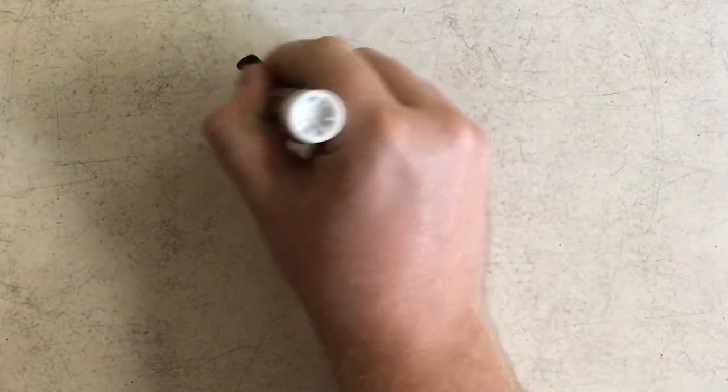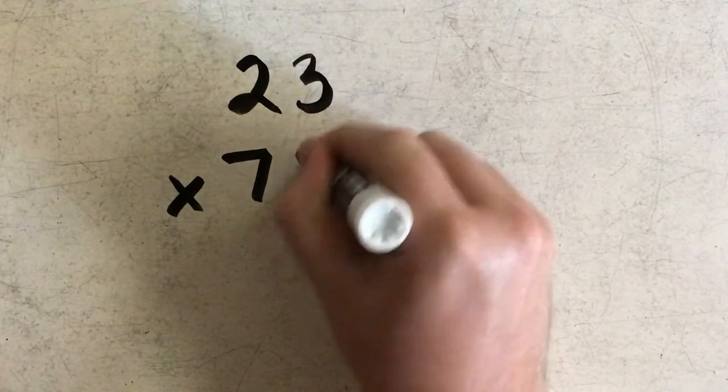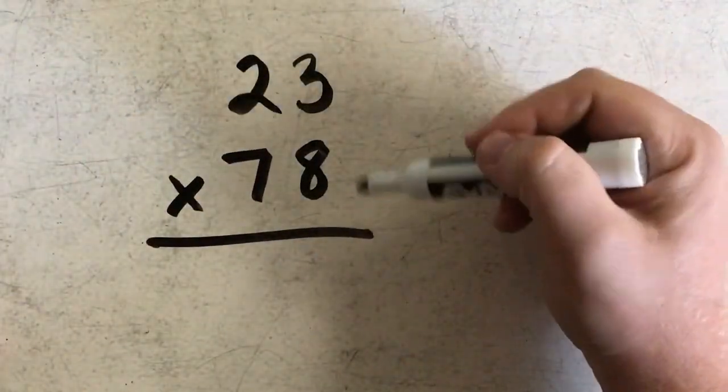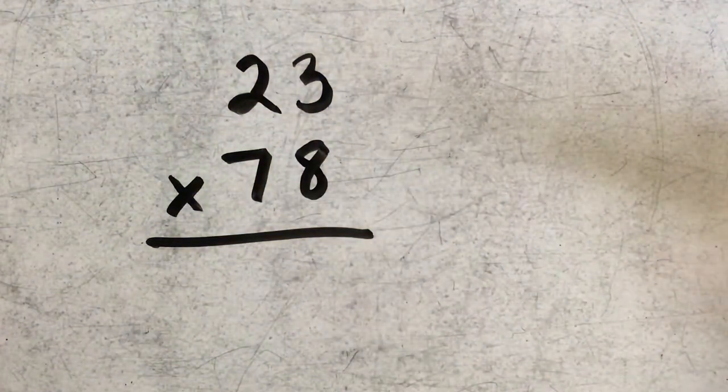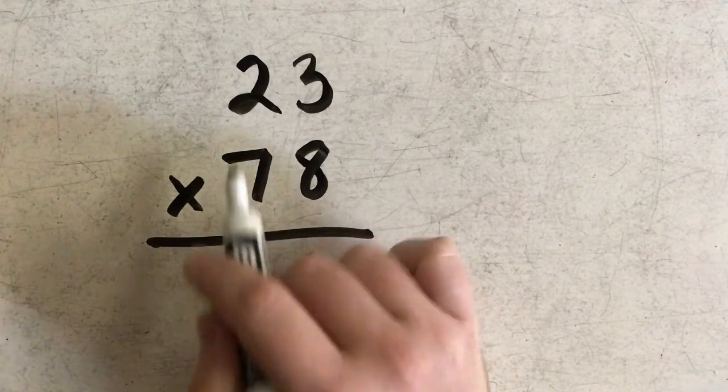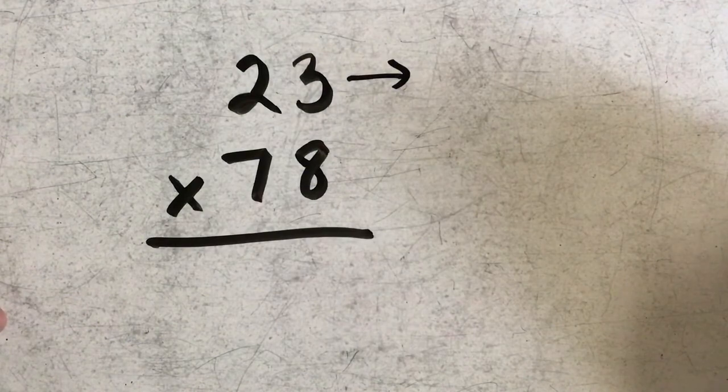So if I had a problem like 23 times 78, what I'm going to do is I want to round both of my factors to the highest place value. So in this case the highest place value are both the tens place.